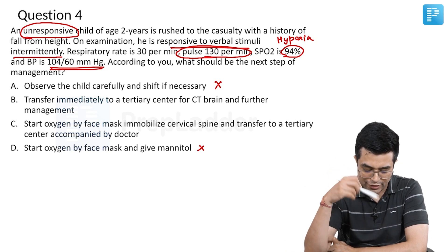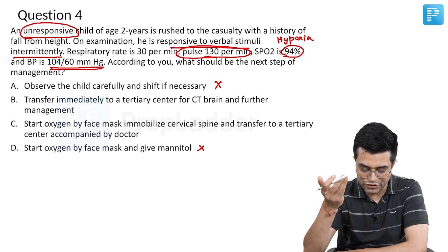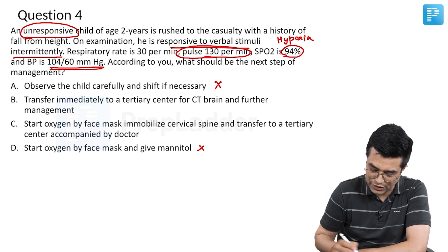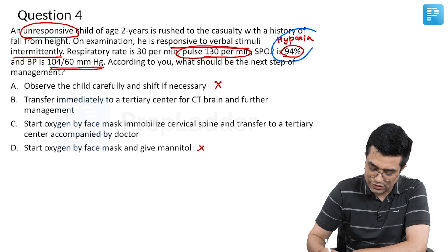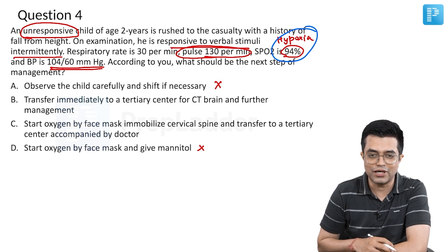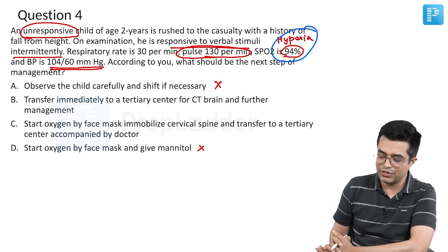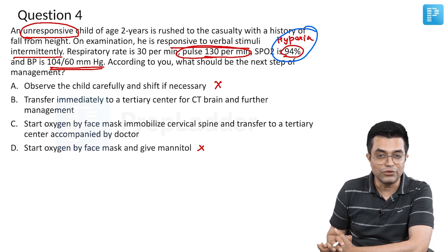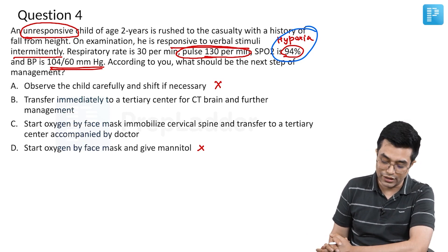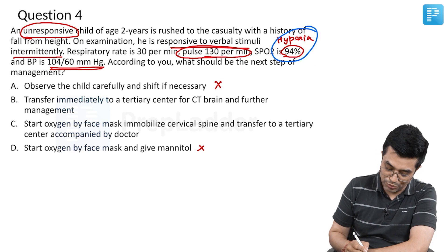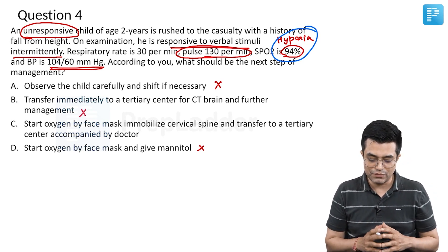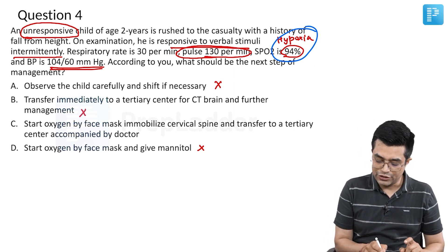Option B says transfer immediately to a tertiary center for CT brain and further management. CT brain is fine, but what about the hypoxia? On room air, the child's saturation is 94% — you cannot leave the child like that. You need to provide oxygen support first, so Option B is also not the most appropriate answer.